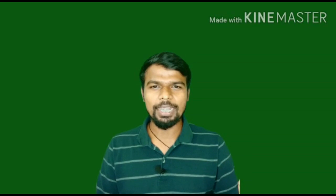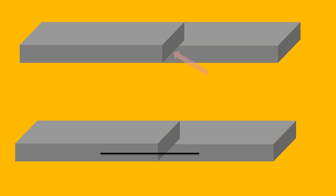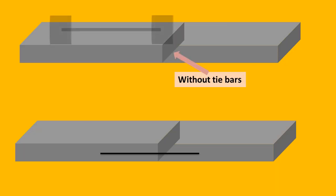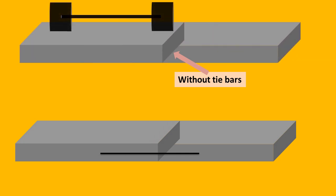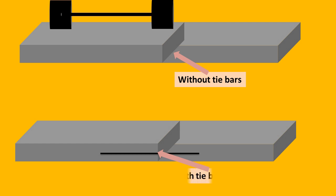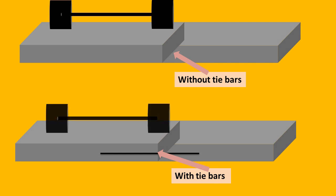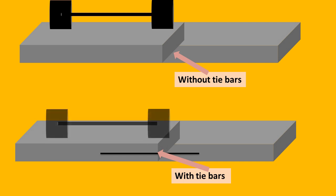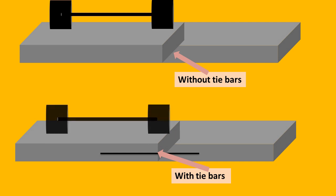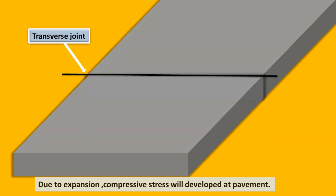The tie bar is also made up of mild steel and it is placed across the direction of traffic. These are commonly used at the longitudinal joint for dividing the pavement into lanes, and when the width of the pavement becomes more than 5 meters. In the case of the tie bar, it is almost the same as a dowel bar. Without providing tie bars, the pavement would be deformed and develops cracks, but after providing tie bars, the pavement would not be deformed, it prevents cracks, and wheel load transfers to the adjacent slab easily.